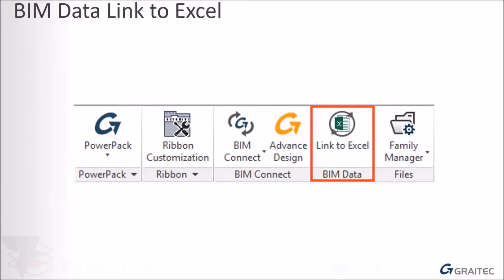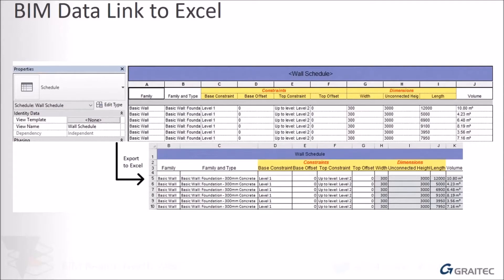It's not just about taking a schedule out so someone else can work on it. This allows a full bi-directional link — we can also update the Excel spreadsheet later when the Revit model changes. It will only let us change instance parameters, not type parameters, because of the impact that would have on types within the Revit family. That's how Revit self-protects its data.